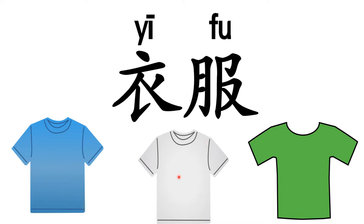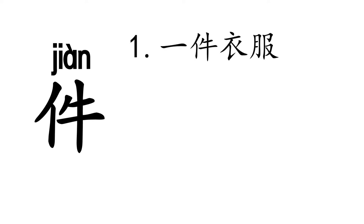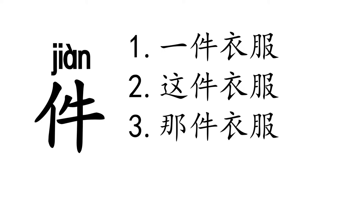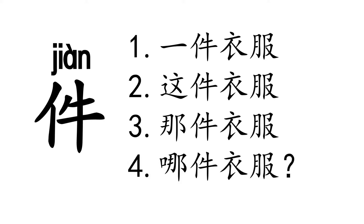This is 白色衣服. This is 绿色衣服. The measure word for 衣服 is 件. Example: 一件衣服 means 'a piece of clothing', 这件衣服 means 'this clothing', 那件衣服 means 'that clothing', 哪件衣服 means 'which clothing?'